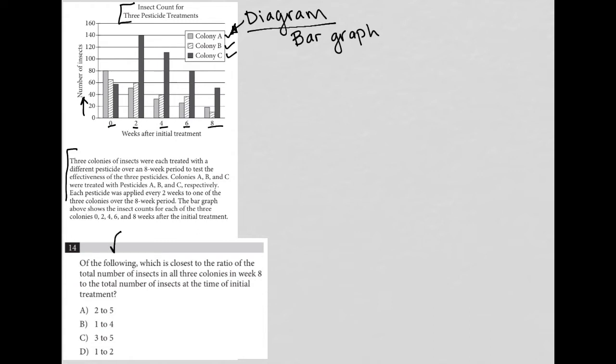So what are we being asked to find here in question 14? It says, of the following, which is closest to the ratio? Okay, so first of all, as soon as I see that word, it's key. Ratio on this test is going to mean fraction. And whatever comes first after this word ratio will be the numerator, and whatever comes second will be our denominator.